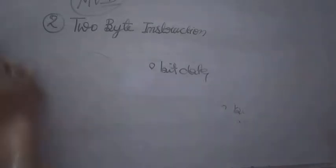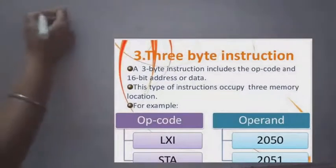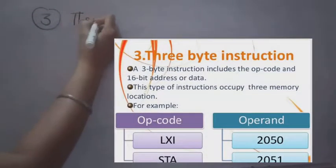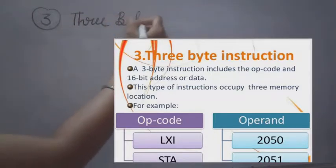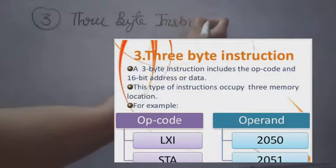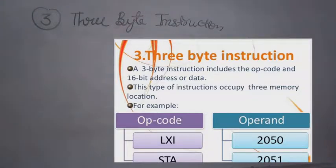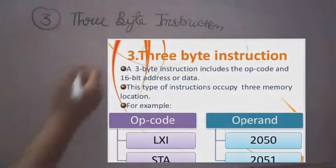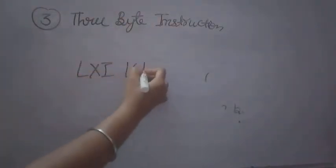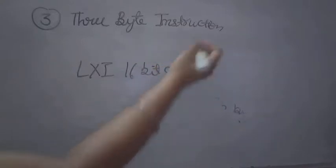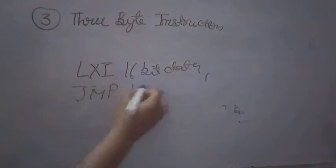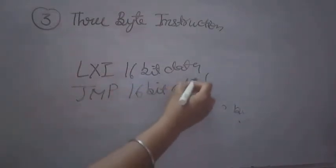Now the third type is three byte instruction. In three byte instructions, the instruction which has 16-bit data or 16-bit address as its operand is a three byte instruction. They need three memory locations to store them in memory. The example of a three byte instruction is LXI with 16-bit data, and similarly JMP with a 16-bit address is also an example of a three byte instruction.